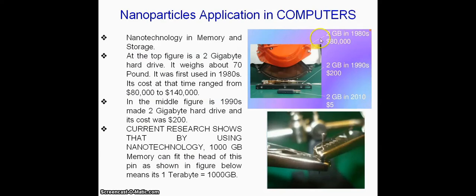Another application of nanoparticles in computers: nanoparticles were used in memory and storage. In the 1980s, a 2 GB hard drive weighed about 70 pounds and cost $80,000 to $140,000. In the mid 1990s, a 2 GB hard drive cost $200.